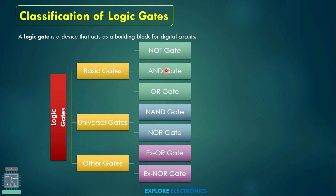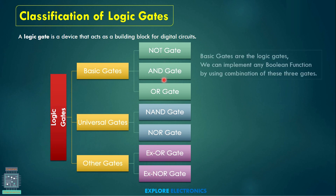Why are the NOT gate, AND gate, and OR gate called basic gates? Using these three gates we can construct any digital circuit. By using a boolean function we can realize any circuit using the NOT gate, AND gate, and OR gate. That's why they are called basic gates.